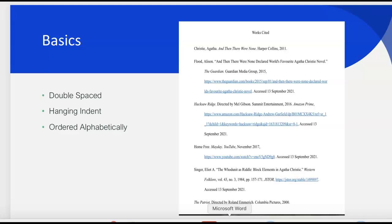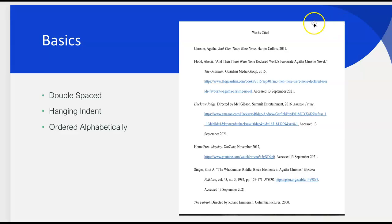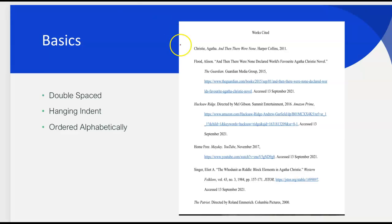I just want to make sure that I touch on the basics of what a works cited page should look like. Here you can see my works cited page — 'Works Cited' is centered in the middle. If it were a real works cited page, your name would be in the upper right-hand corner with a page number. It is also double spaced, and I also have a hanging indent. For the entries that are longer, they're each offset a little bit that way.